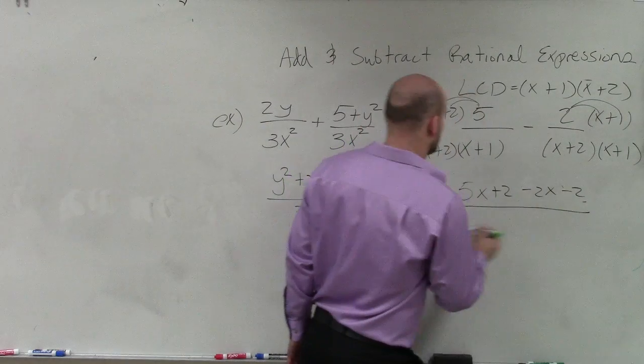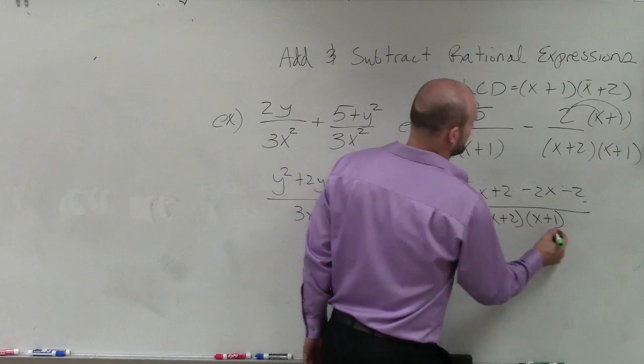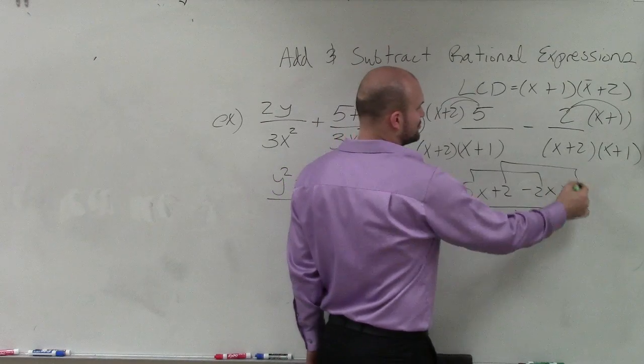I like to do that when I'm simplifying this because what that helps me do is just say, well, now I can combine my like terms and say that's 5x minus 2x, and that's 2 minus 2, which is 0. So my final answer is 3x divided by (x + 2) times (x + 1).